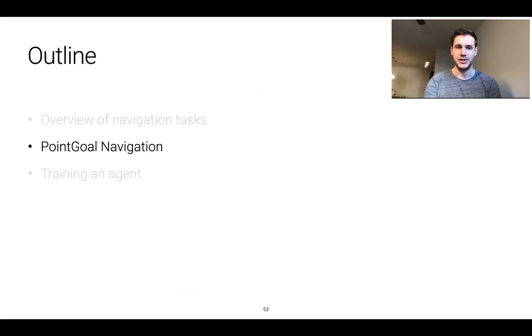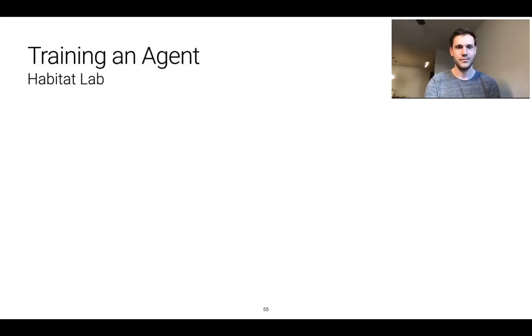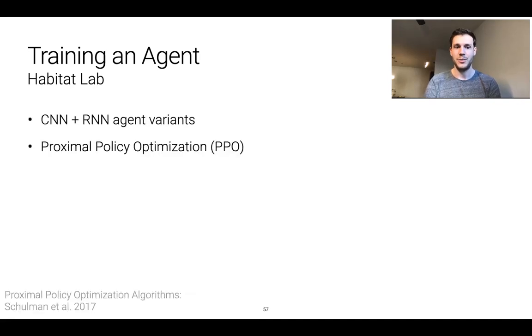And now I'll talk about training an agent. So training the agent is done in Habitat lab and specifically within the Habitat baselines folder. This contains CNN plus RNN agent variants and also a high quality implementation of proximal policy optimization or PPO. PPO is what we use in that second step. PPO takes the current policy, a set of experience collected under it, and updates the weights of the agent such that it will get a higher expected reward over the course of an episode or do a better job at its task.